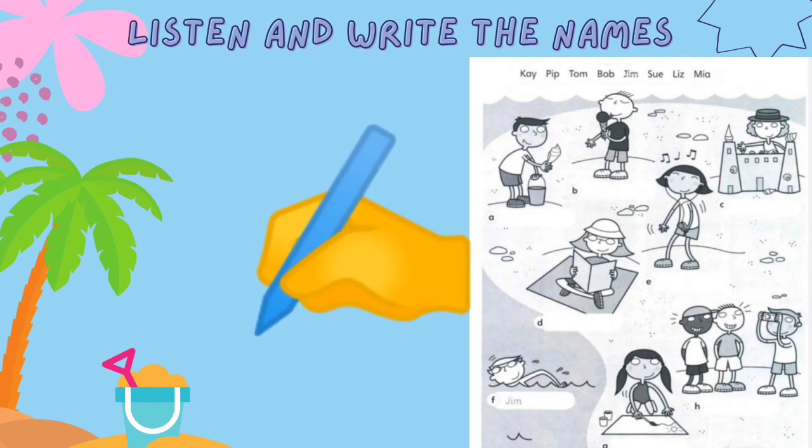Mia's making a sandcastle. It's really big. There are lots of shells on it. Look. There's Tom. Tom's looking for shells.